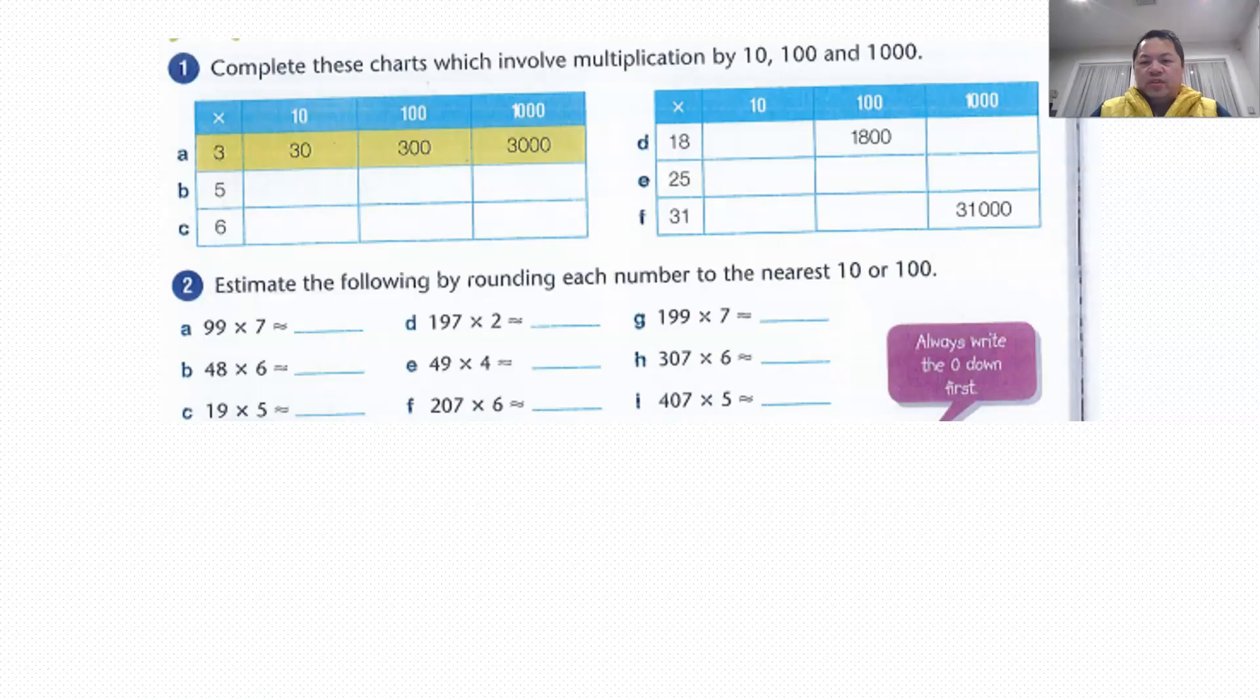So let's start with multiplication. On page 102, you will be required to do some simple multiplication questions. Personally, I don't think it will be an issue for any of you. The first one, you just have to find out the equivalent answers when you multiply by 10, by 100, and 1,000. So I've done the first one for you.